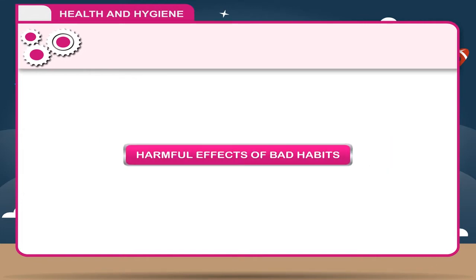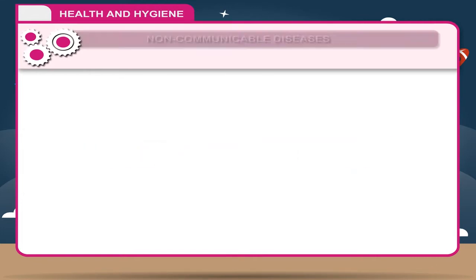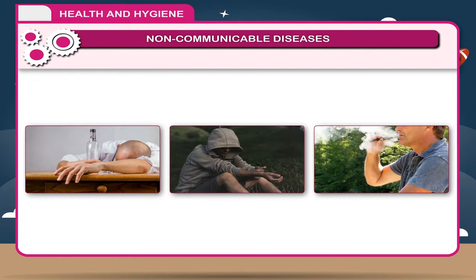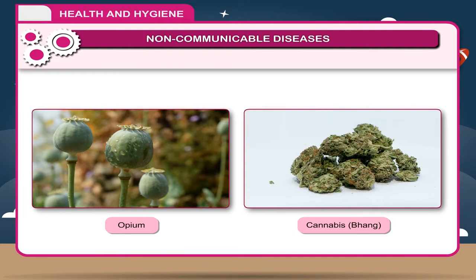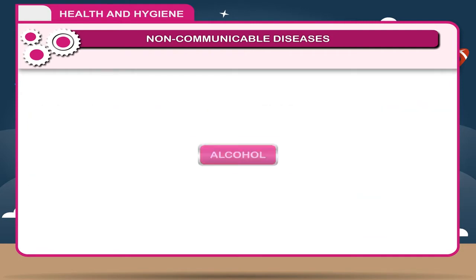Harmful effects of bad habits: Some people consume alcohol, drugs, tobacco, opium, cannabis and bhang, which affect the body adversely, causing several types of diseases. Some of these are described here.